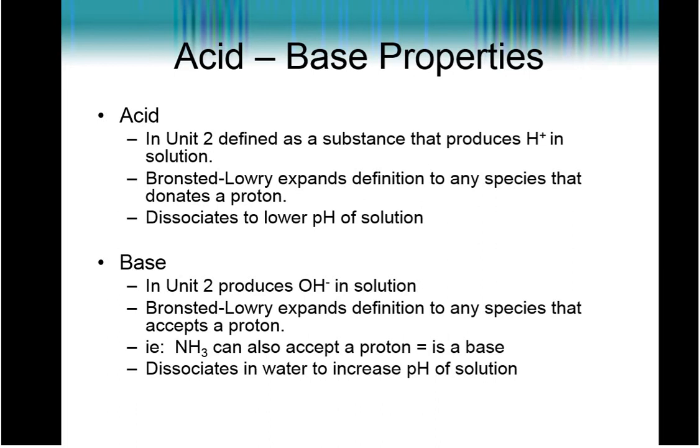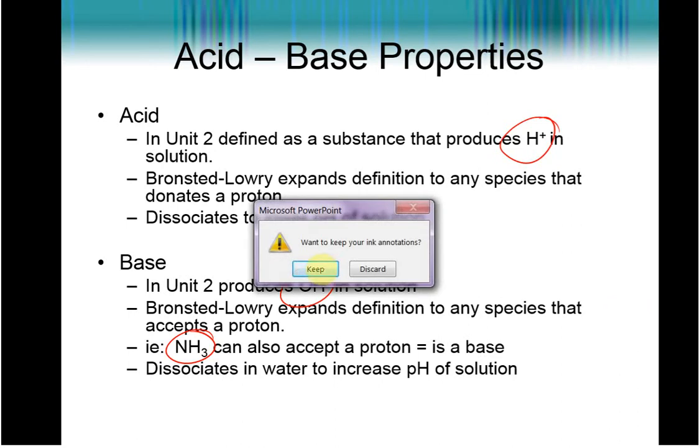Now in unit two, we defined a base as something that would donate a hydroxide to solution when it dissociated. The better definition is to say that it's going to be any substance that will accept a proton. Now while that means that all hydroxide containing compounds are still going to accept a proton to make water, it also allows weak bases like ammonia to be considered a base as well because then it can also accept a proton. Now when a base dissociates, it is going to increase the pH of solution.